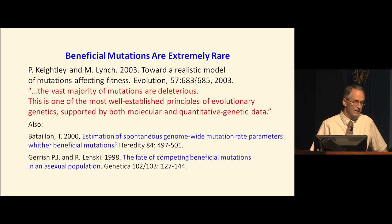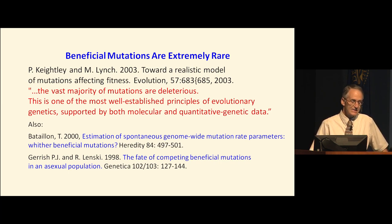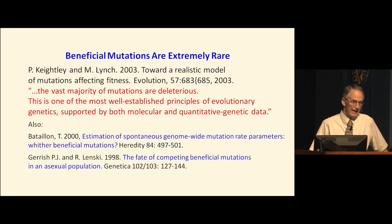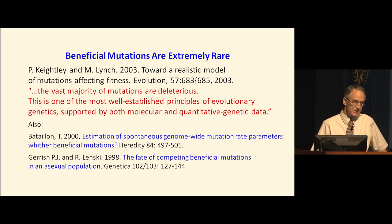Here's a strong quote by Kitely and Lynch: 'The vast majority of mutations are deleterious. This is one of the most well-established principles of evolutionary genetics, supported by both molecular and quantitative genetic data.' One paper has a subtitle 'Wither Beneficial Mutations,' and the author argues that beneficials are so rare we can't measure how rare they are. Garish and Linsky looked at biological data from the long-term evolutionary experiment with bacteria and found that the beneficial mutations were indeed exceedingly rare — they estimated one in a million mutations as beneficial.